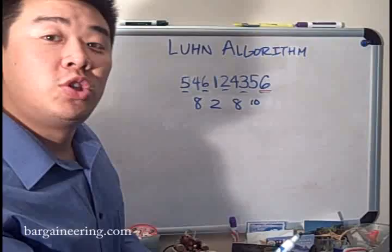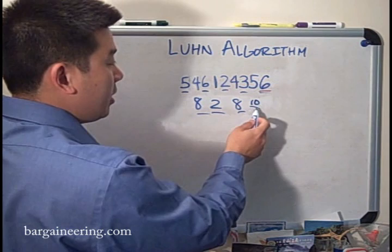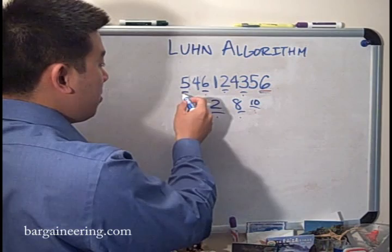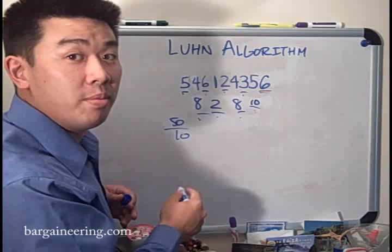Then what you do is sum up all these numbers. So you have your 6, 10, 16, 19, 27, 29, 31, 37, 45. Then 45 plus the 5 is 50.